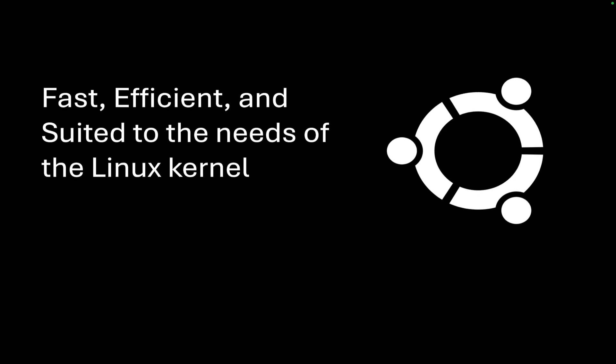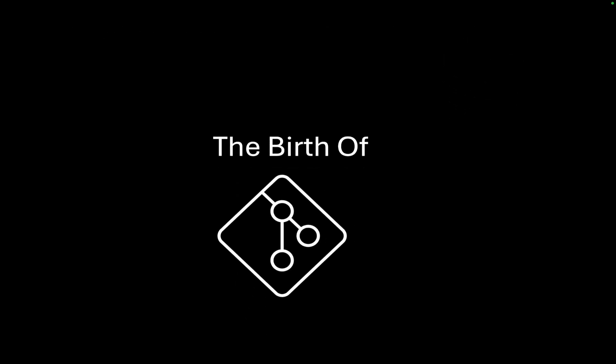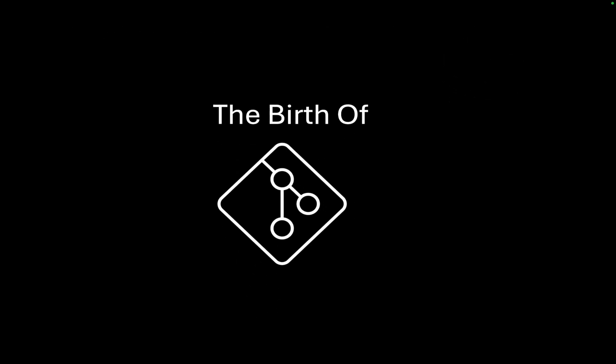That's where Linus Torvalds decided to take action and create his own version control system. On April 6, 2005, he announced his plan to make an alternative to BitKeeper — a system that was fast, efficient, and suited to the needs of the Linux kernel project. And finally, we had the birth of Git.